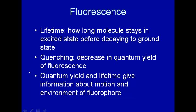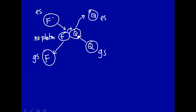Quantum yield and lifetime give information about the motion and environment of the fluorophore. If this is not a very viscous solvent, the fluorophore and quencher will move around rapidly and quenching will occur at a greater rate than in a more viscous solution. By measuring the concentration dependence of the decrease in quantum yield or lifetime as a function of quencher concentration, one can determine how fast these molecules are moving around, or determine the viscosity of the medium.